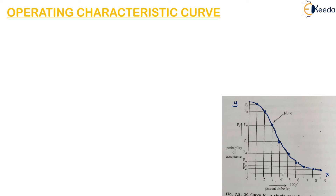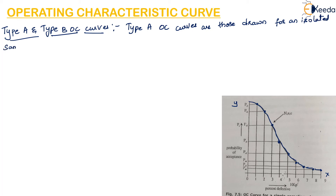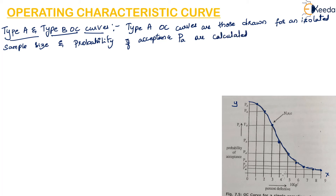There are two types of OC curves: type A and type B. Type A OC curves are drawn for an isolated sample size, and the probability of acceptance PA is calculated using the hypergeometric distribution, like Poisson's distribution or binomial distribution.